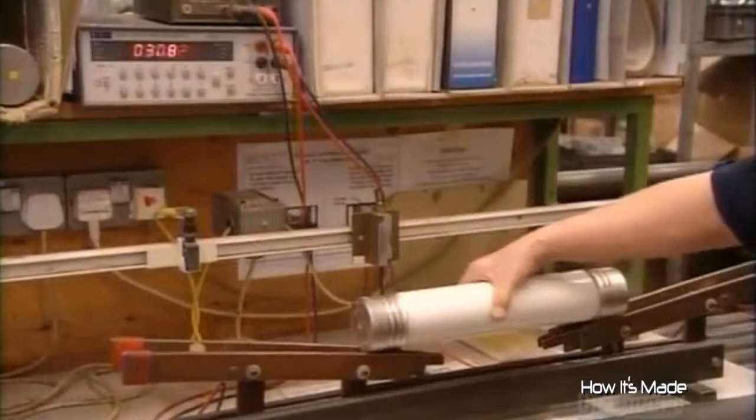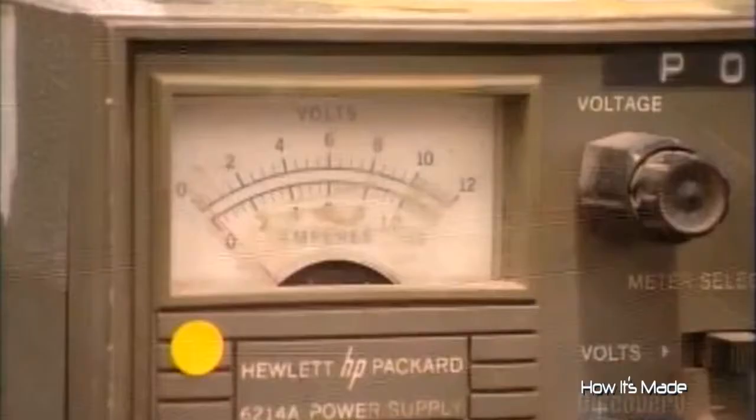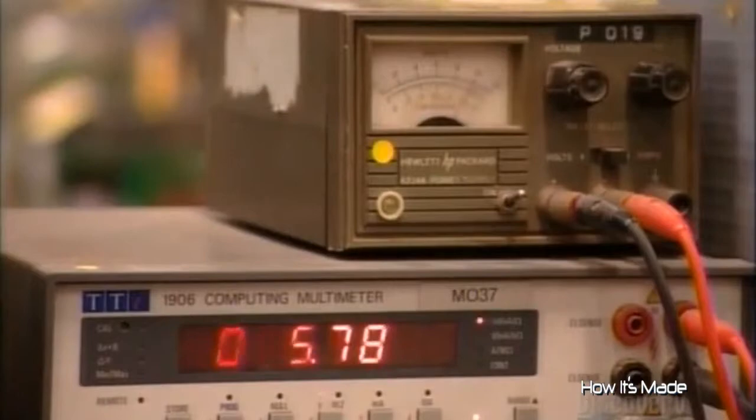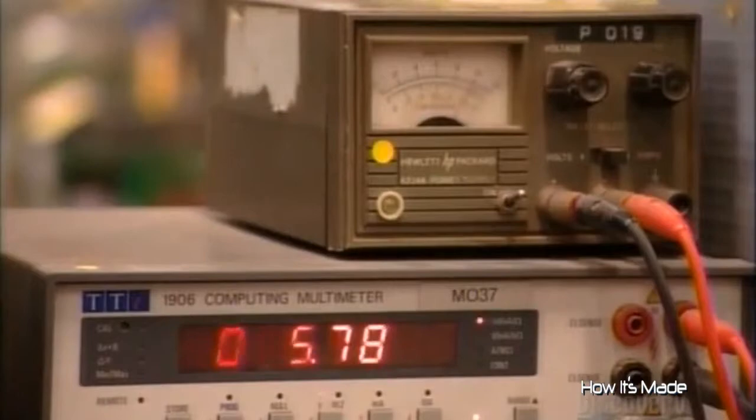They run a current through each one of these fuses, checking the voltage throughout to confirm that it's in good working order. They pump sealant around the rims of the caps to make them completely airtight.